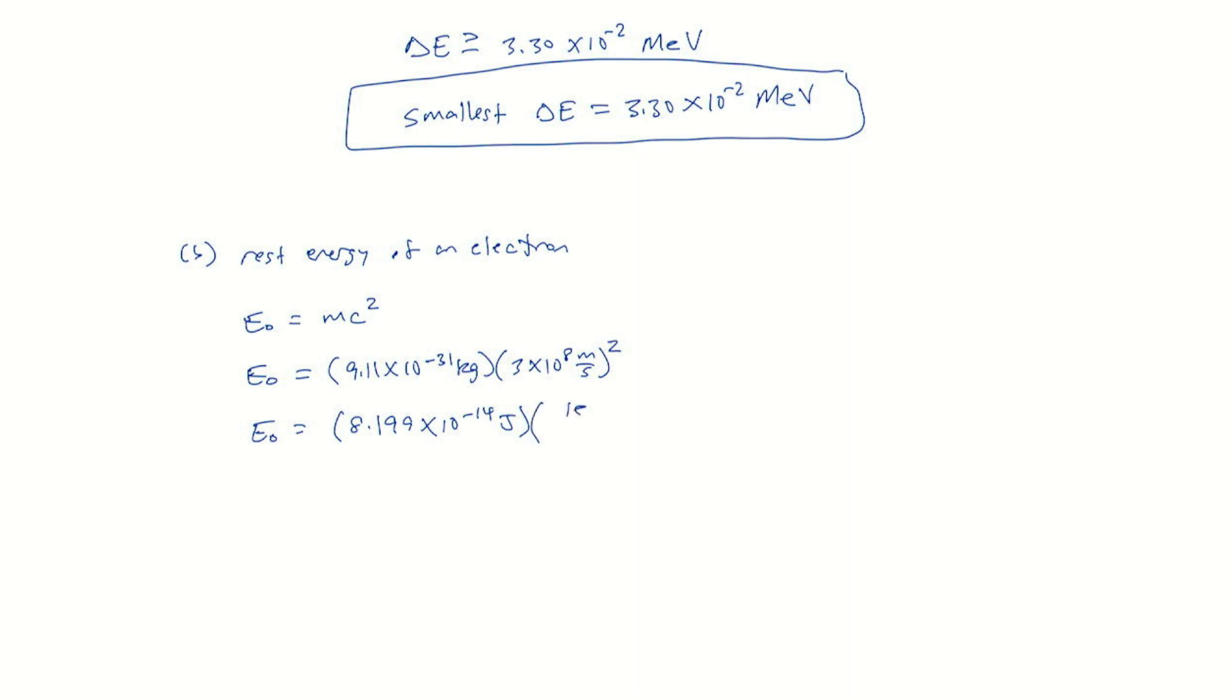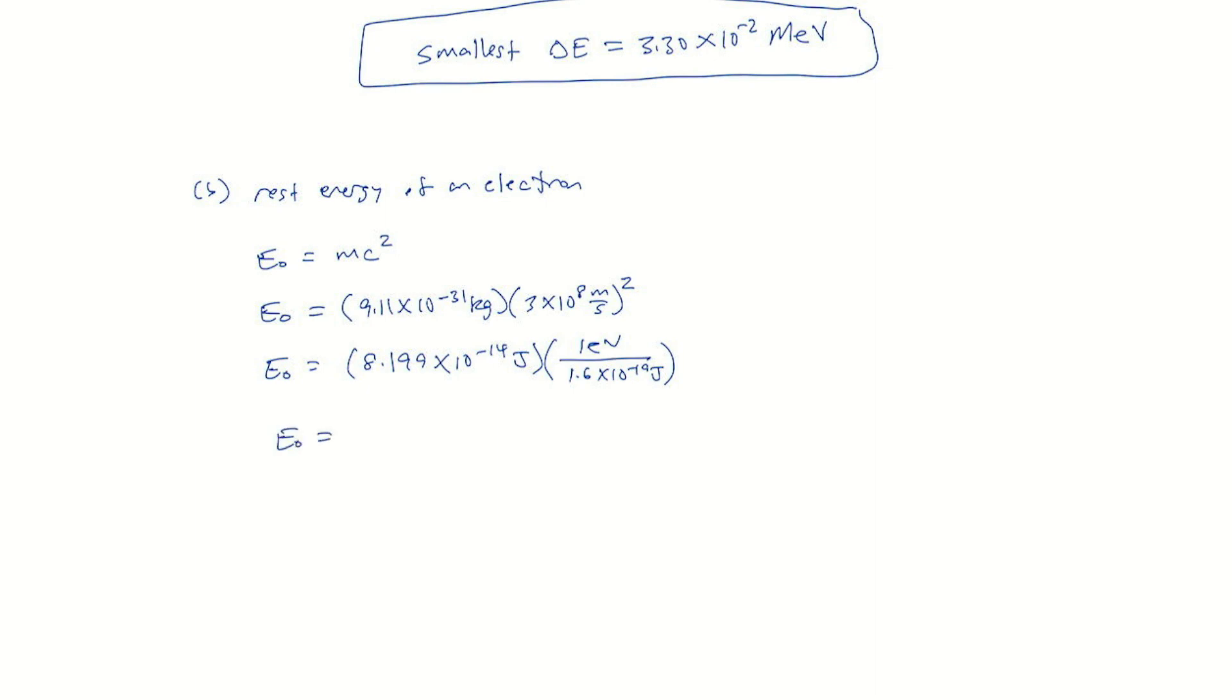Convert that to eV. 1.6 times 10 to the minus 19 joules per eV. And so we get E naught is 5.12 times 10 to the 5th eV. Convert that to mega electron volts. And we find the rest energy of the electron is 0.512 mega electron volts.